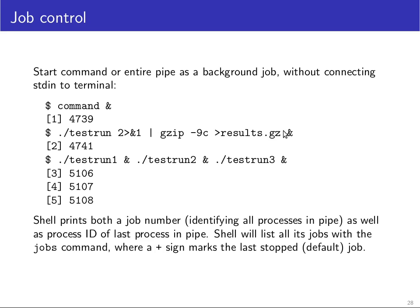This is the main difference between a process ID and a job number: a job number refers to an entire pipe, whereas a process ID refers to an individual process. So there are two processes here — this is only the last of these processes — but together those two processes form one job for the shell, and this is job number two.